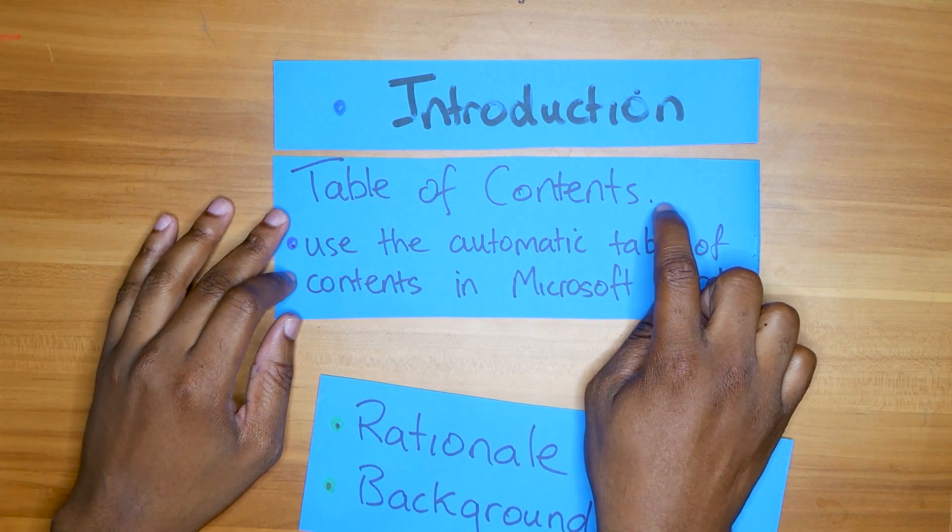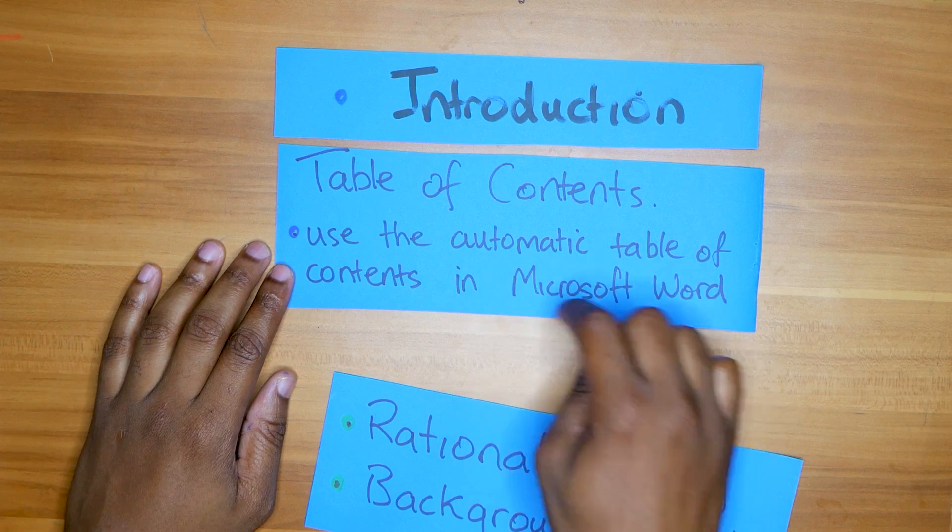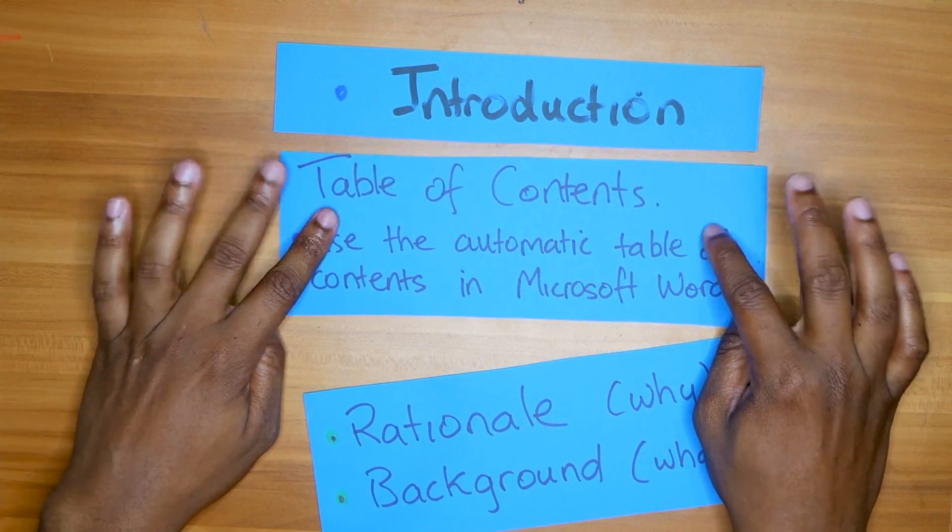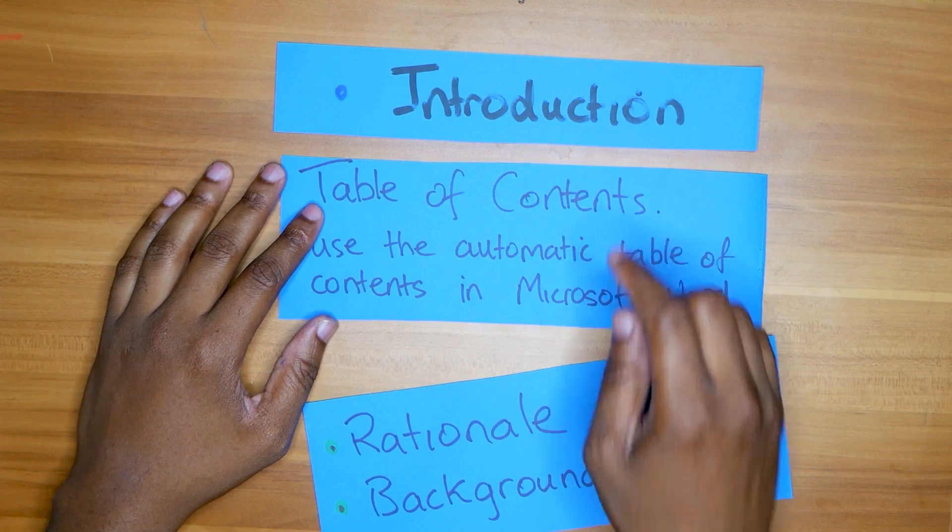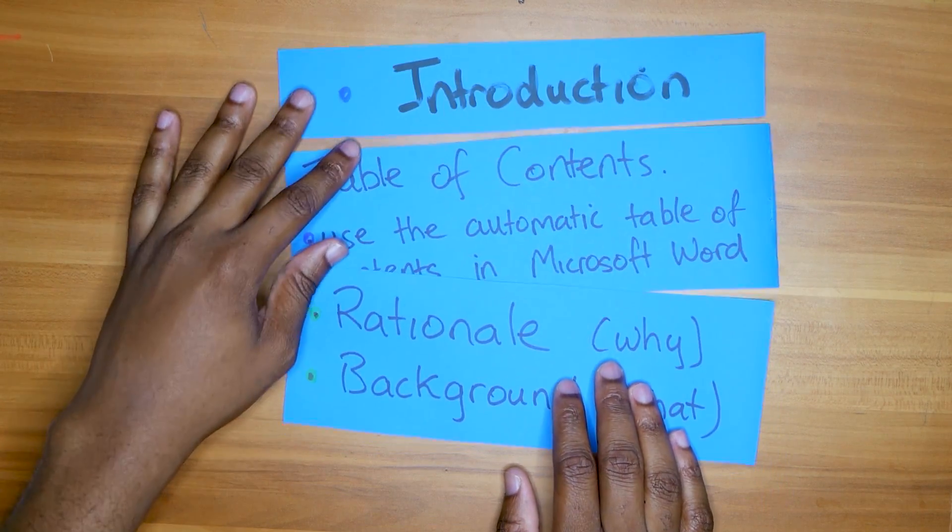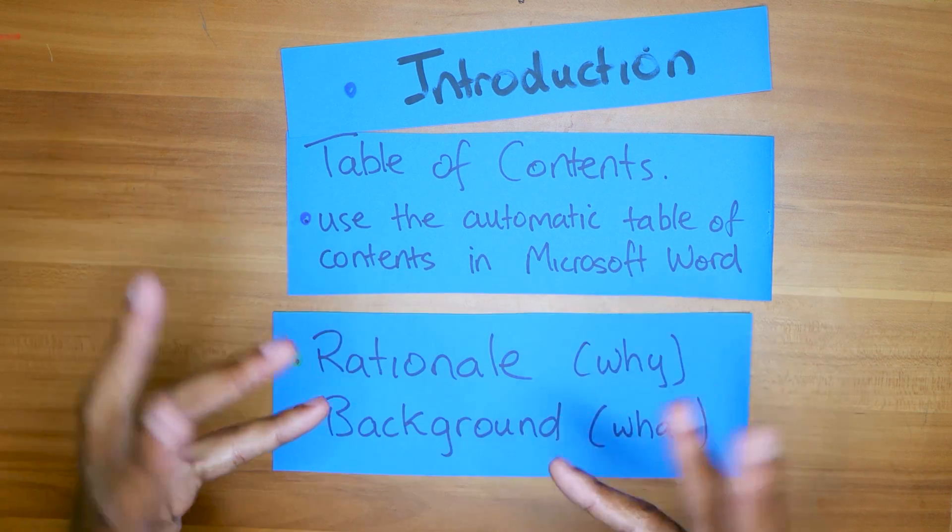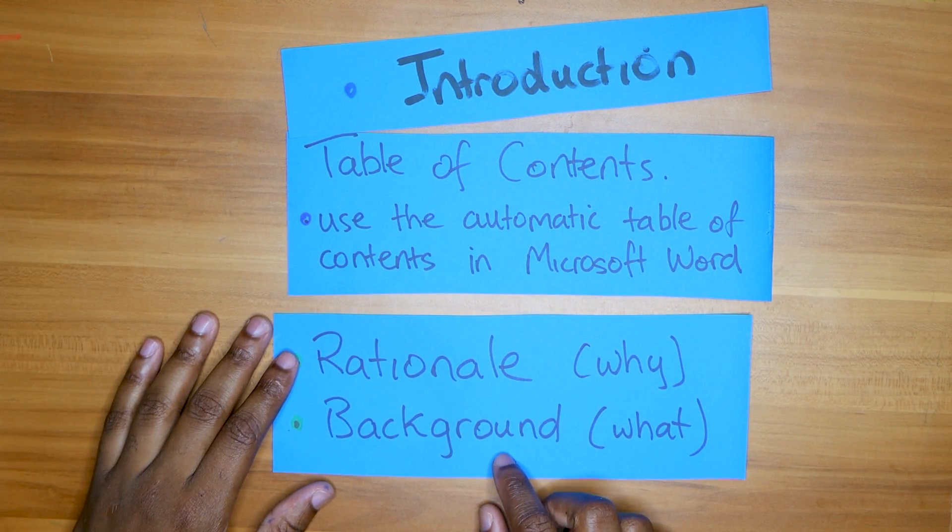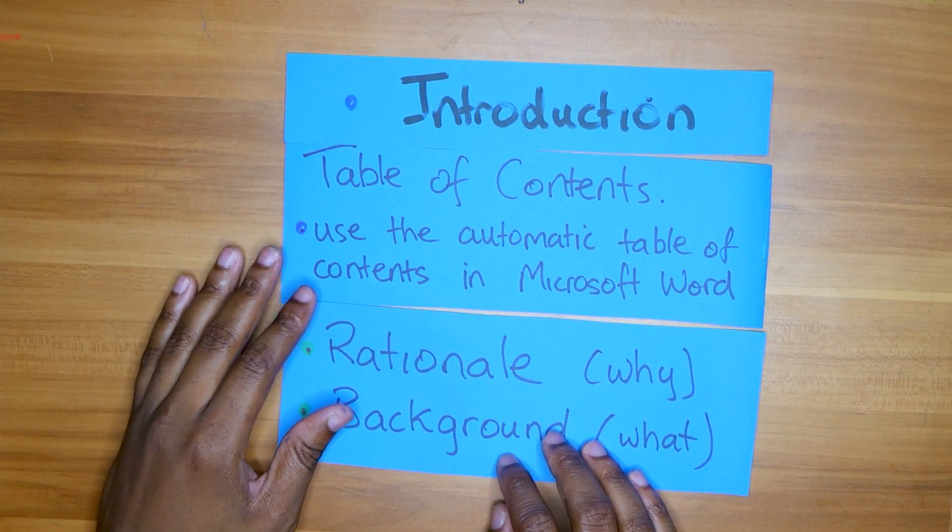After you finish your title, you go to your introduction. Let's talk about the introduction, which is worth four marks. The introduction, first things first, should have a table of contents. Use the automatic table of contents in Microsoft Word, please. Learn how to use Microsoft Word if you want to do your SBA properly.